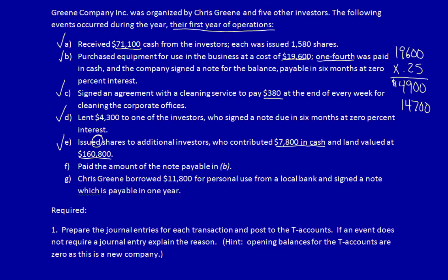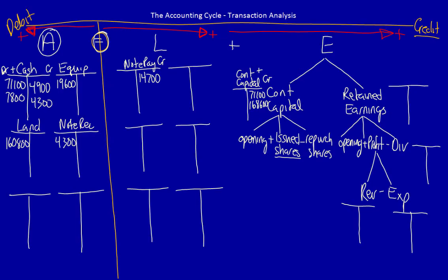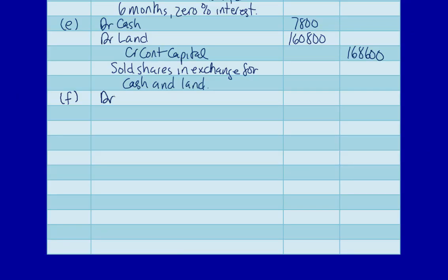Transaction F: paid the amount of the note payable from transaction B — $14,700. This is a transaction. What did the business get? They got back their note payable; they gave the IOU to the bank that loaned the money, and now they're getting it back, so liabilities go down. What did they give away? Cash — cash reduces by $14,700. Post to T-accounts: note payable reduces by $14,700; cash reduces by $14,700. Journal entry: debit note payable (liability accounts always reduce through a debit), credit cash, plus explanation.